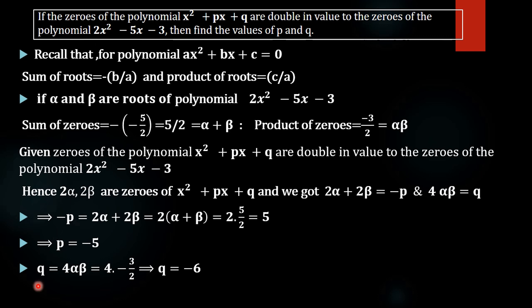Hence, p equals minus 5 and q equals minus 6.